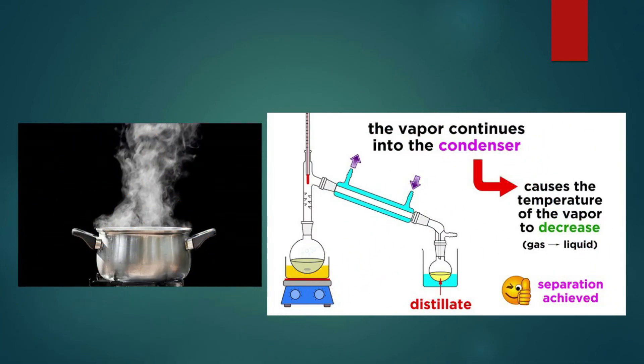You can see here: the vapor after boiling is collected in a tube, and all the vapor changes back into water, which is collected as the distillate.